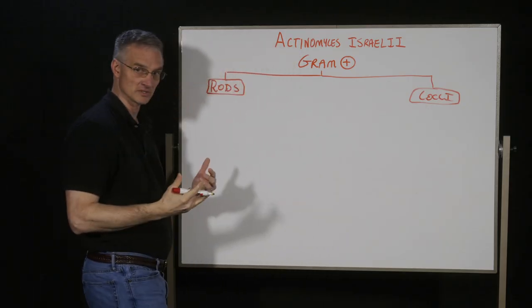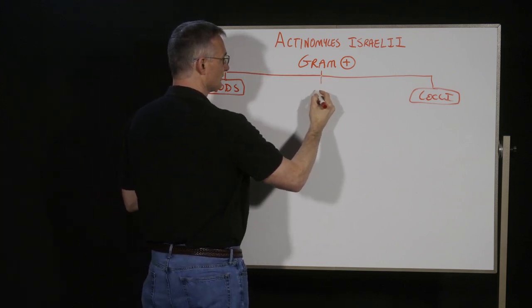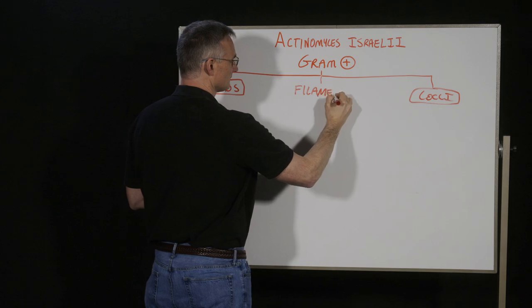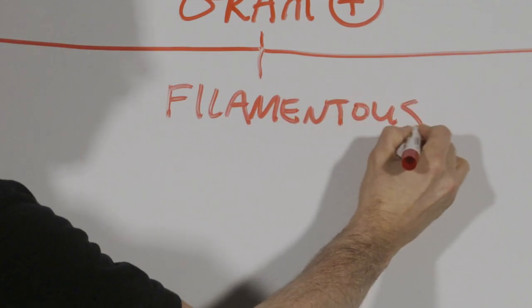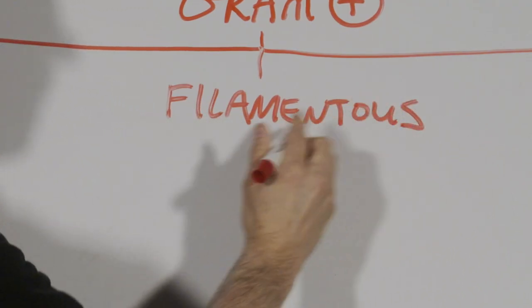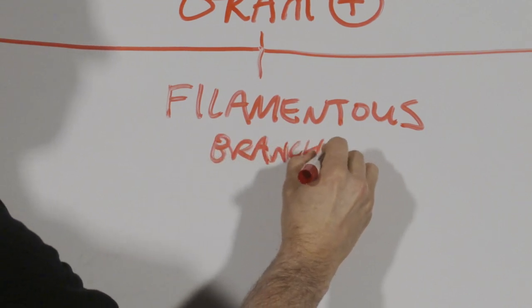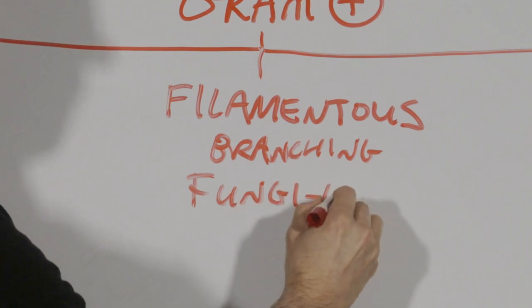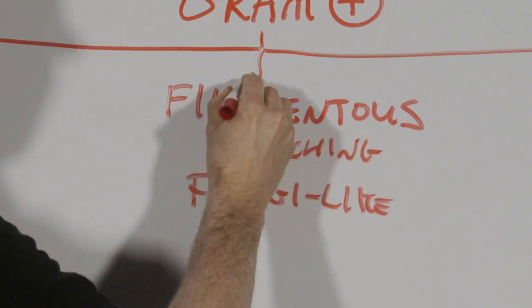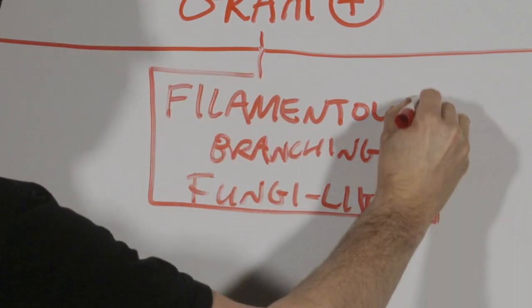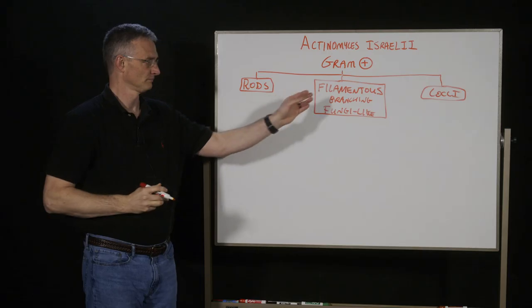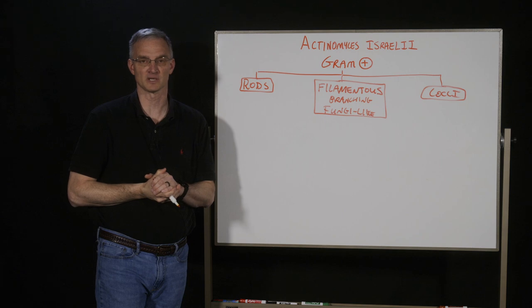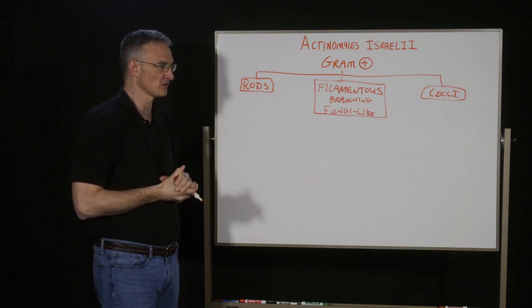And our group for today, which specifically involves actinomyces, is going to be filamentous that are branching that are sometimes described as fungi-like. So as you're learning your bugs, these are the first steps that we're going to take: what are we dealing with? A rod, a cocci, or this filamentous?